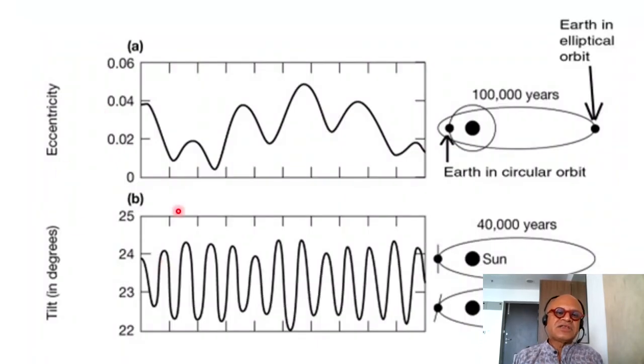Okay, so here we are looking at eccentricity over time. You can see that the changes are not very uniform as we saw here. So you can see the eccentricity changes from 0.04 to almost zero and back and so on. So that's happening on 100,000 years. Earth in a circular orbit versus Earth in an elliptical orbit, highly exaggerated because this is a very small change.